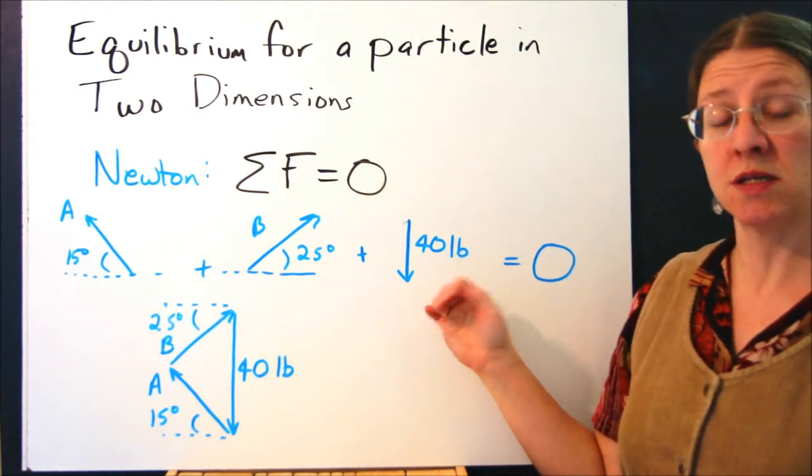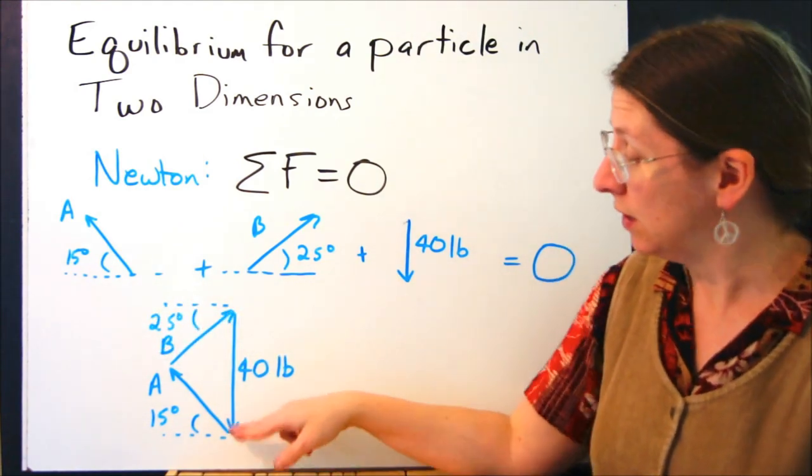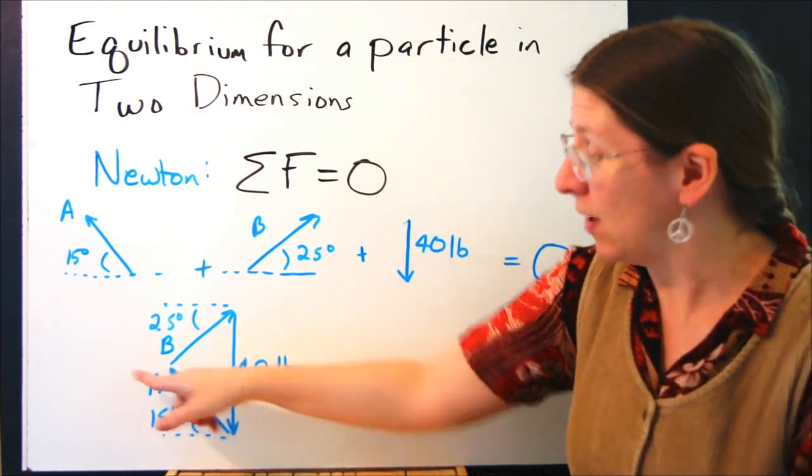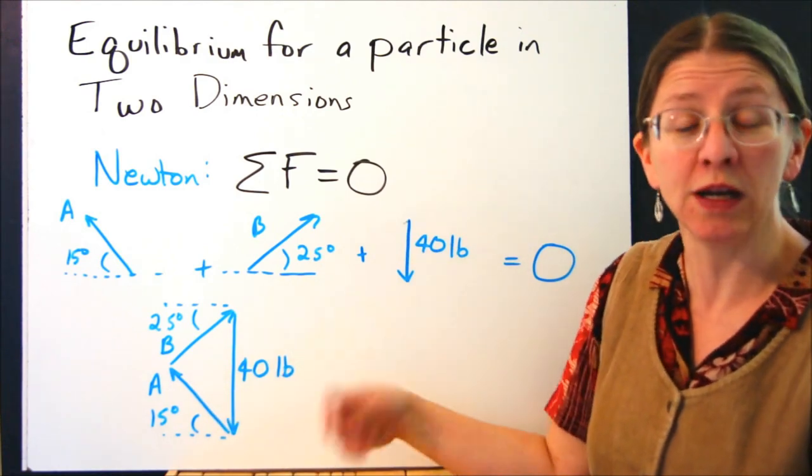So if I have these three forces, they have to add up to zero. I can put that in a force triangle, and saying that they equal zero means that I come back to where I started from. So A plus B has to equal 40, or A plus B plus 40 equals zero.